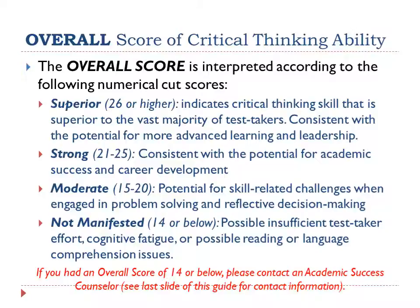The overall score is reported according to four broad numerical cut scores. Superior indicates critical thinking skills that are superior to the vast majority of test takers. Strong indicates consistent with the potential for academic success and career development. Moderate indicates a potential for skill-related challenges when engaged in problem-solving and reflective decision-making. And lastly, Not Manifested means there was possible insufficient test taker effort, cognitive fatigue, or possible reading or language comprehension issues. If you had an overall score of 14 or below, please contact an academic success counselor.